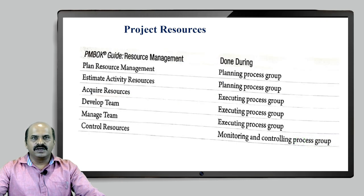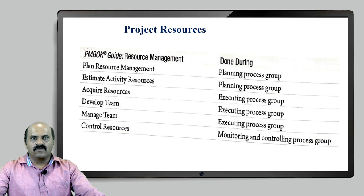As per the PMBOK — the Project Management Body of Knowledge, released by the Project Management Institute, United States — resource management is very important and involves the planning stage, executing stage, and monitoring and controlling stage of a project. Plan resource management happens at the planning stage. Estimating activity resources — how much activity is going to be executed by a particular resource — also has to be estimated at the planning stage.